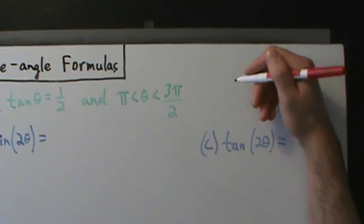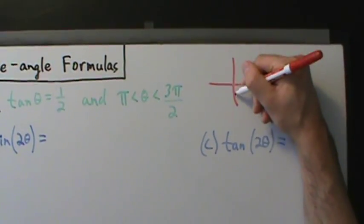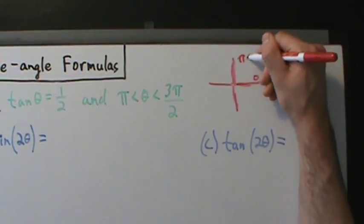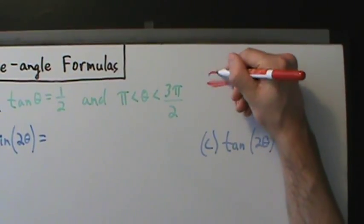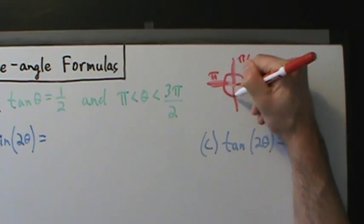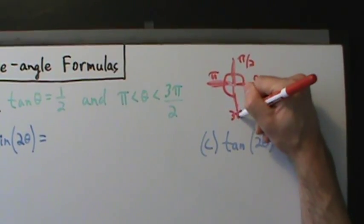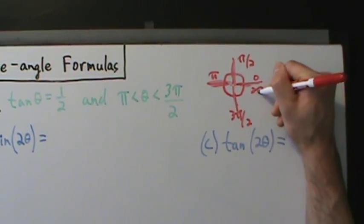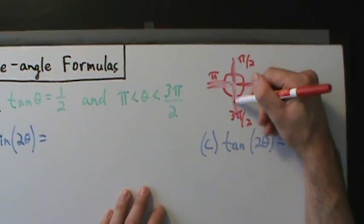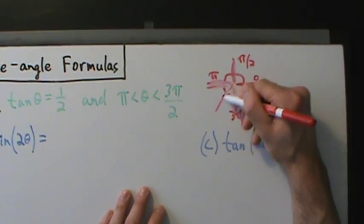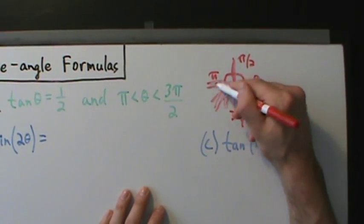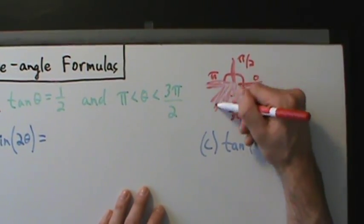If you're not sure about that right away, just set up a little picture. Here's an angle of 0 radians, pi over 2 radians puts you over here, pi radians puts you here. So 0 goes up to get pi over 2, over here to get pi, and then 3pi over 2 will be down here, and all the way back full circle for 2pi. So if theta is between pi and 3pi over 2, it's going to be somewhere in that region.